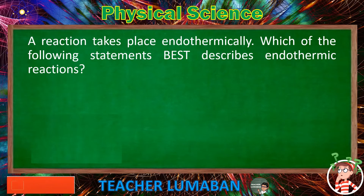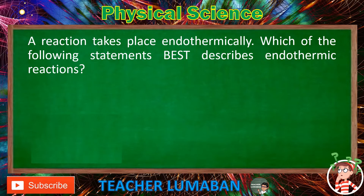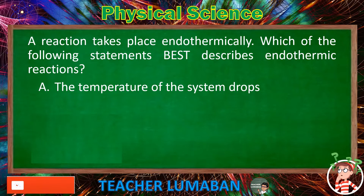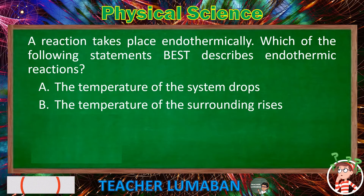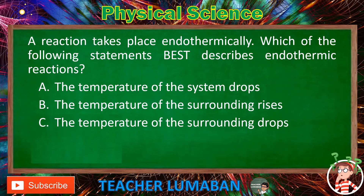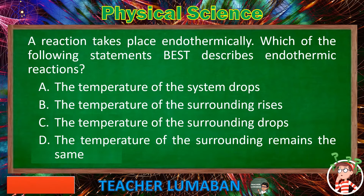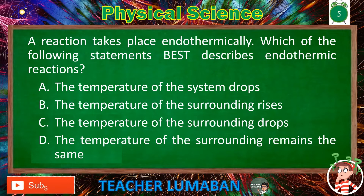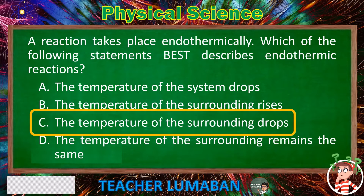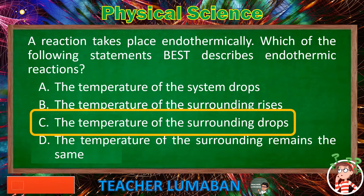A reaction takes place endothermically. Which of the following statements best describes endothermic reactions? Letter A: the temperature of the system drops. Letter B: the temperature of the surrounding rises. Letter C: the temperature of the surrounding drops. Letter D: the temperature of the surrounding remains the same. The correct answer is Letter C. A reaction that takes place endothermically — the temperature of the surrounding drops — best describes endothermic reactions.